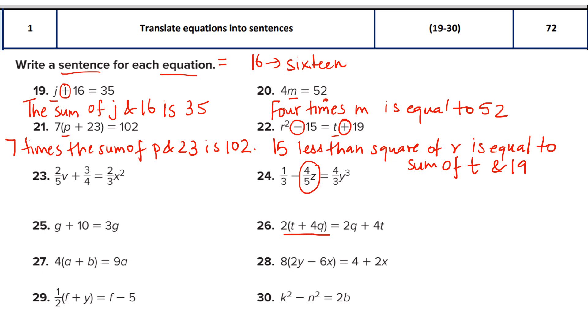We will similarly do question 23. Here you see multiple operations. Here 2 over 5 is multiplied to v. Here it is a fraction 3 by 4. Both are added and this is equal to this value. So we write: 3 by 4 or you may write 3 by 4 or you may also write 3 fourths is equal to how much? 2 over 3 or 2 thirds of x squared. Okay.